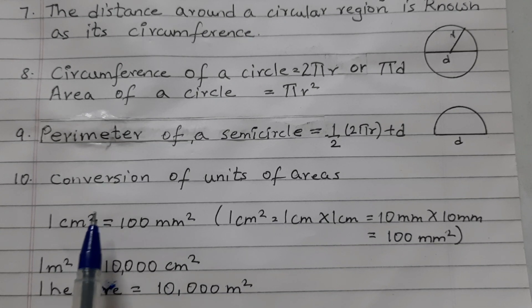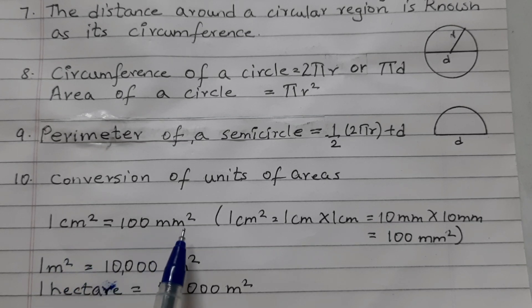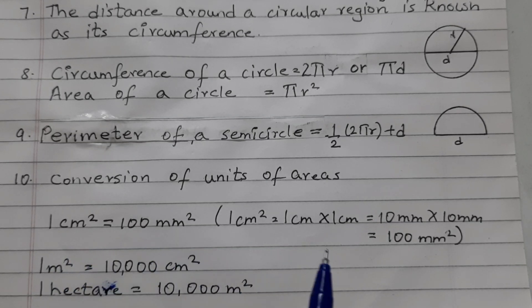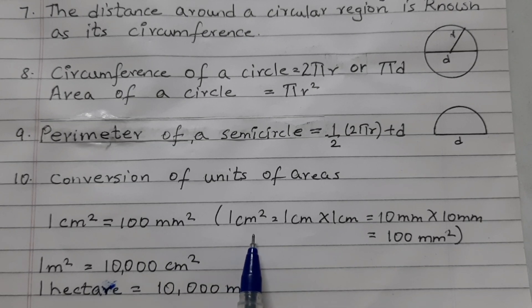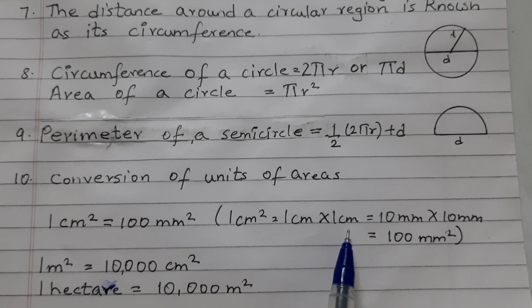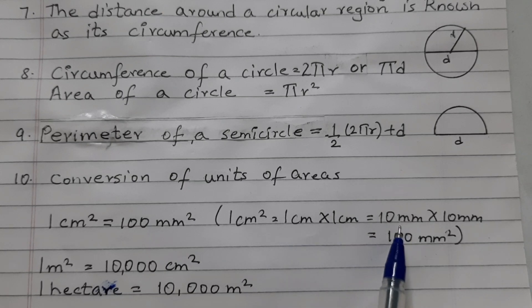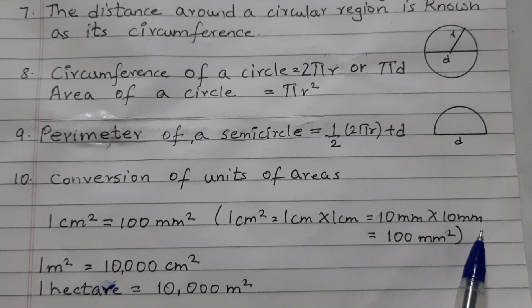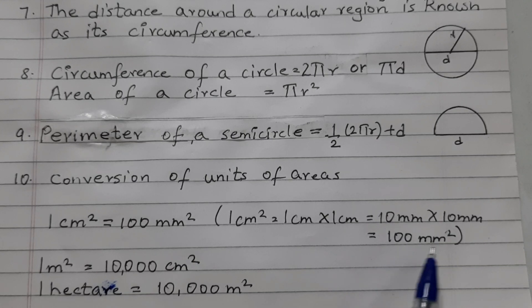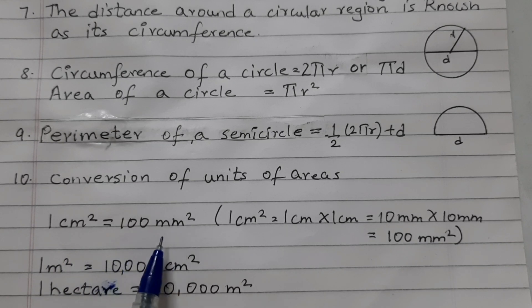You need to know some conversions of units of areas. 1 squared centimeter is equal to 100 squared millimeter. And how do you get this? 1 squared centimeter means 1 centimeter into 1 centimeter. And we know that 1 centimeter is equal to 10 millimeter. So 10 millimeter into 10 millimeter. 10 into 10 is 100 and that equals to 100 squared millimeter.